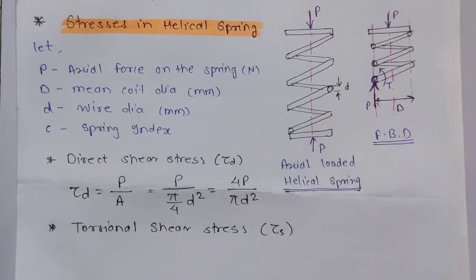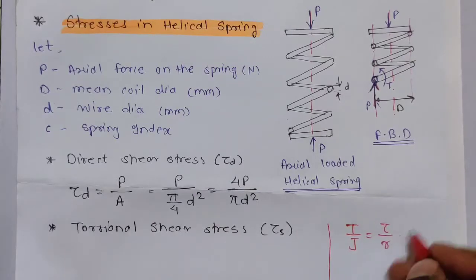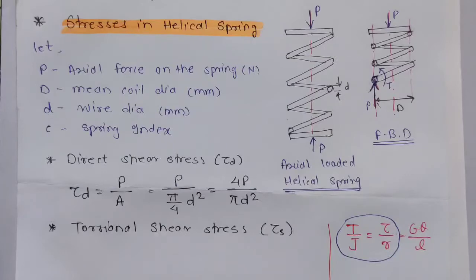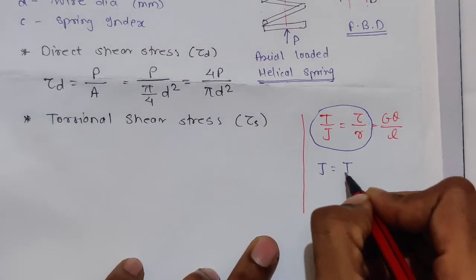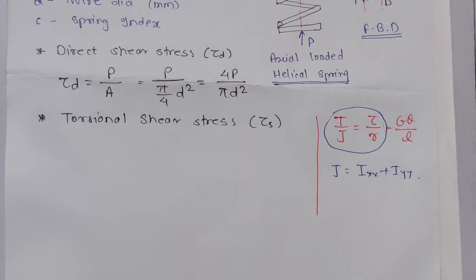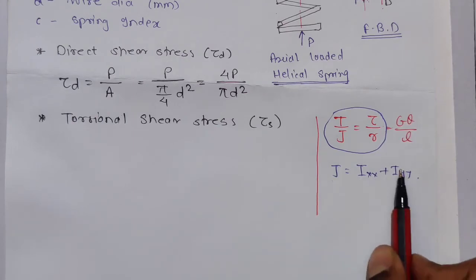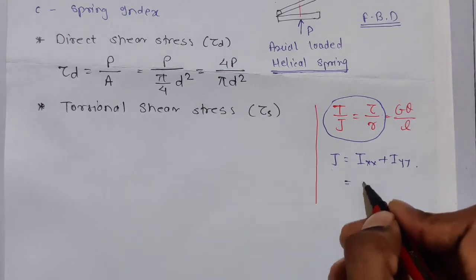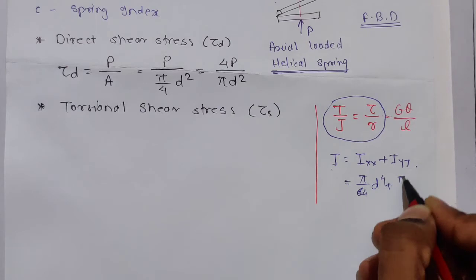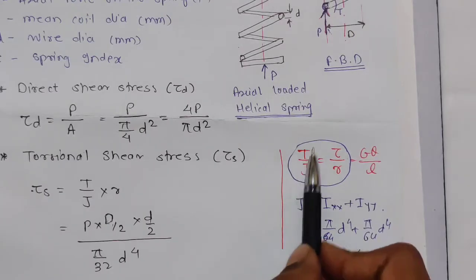We know the formula: T/J = τ/r = Gθ/L. Here J is the polar moment of inertia, which equals I_xx + I_yy from the perpendicular axis theorem. That gives π/64·d⁴ + π/64·d⁴ = π/32·d⁴.